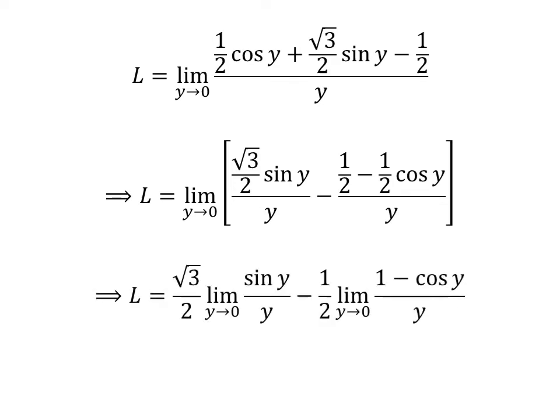We can rewrite the above statement as a difference of two limits and also take the constants out: L is equal to square root of 3 upon 2 times the limit of sine of y upon y, minus half times the limit of 1 minus cosine of y upon y, as y approaches 0.